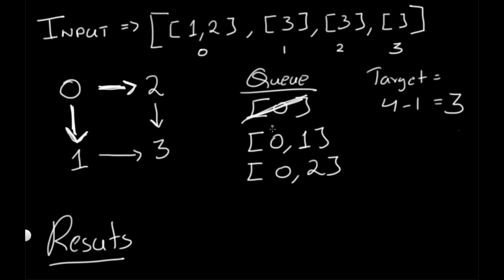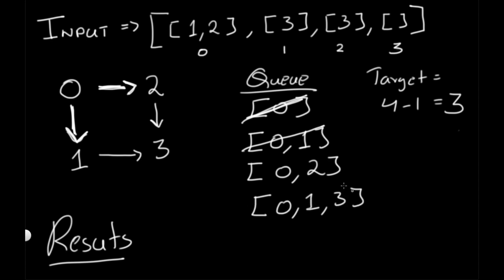Next we pop out [0, 1]. The last element is 1, which is not equal to 3. So we look for 1's neighbors — node 1 points to 3 — and we add [0, 1, 3] to the queue. Then we pop [0, 2]. Again, 2 is not equal to 3, so we look for 2's neighbors, which is 3, and add [0, 2, 3] to the queue.